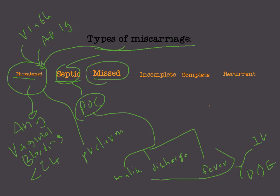The third type is missed miscarriage — an embryo that has died or not developed normally, often without any bleeding. If on ultrasound the crown-rump length is more than 7 millimeters but there is no fetal heartbeat, this is a missed miscarriage — essentially an empty sac with a dead embryo.